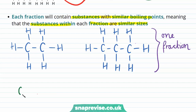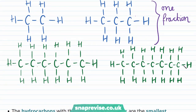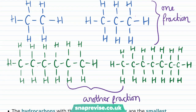Similarly, we might expect another fraction to contain the alkanes hexane and heptane, which are the names used for alkanes with six and seven carbons respectively. The length of the carbon chain in hexane and heptane is similar enough that they're likely to be in the same fraction, but different enough to that in ethane and propane that they'll be two separate fractions — one with the shorter alkanes and one with the longer alkanes.